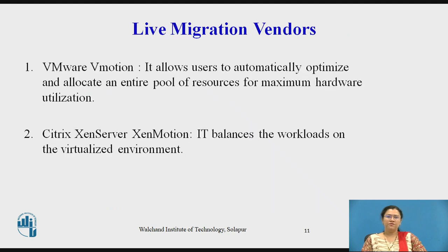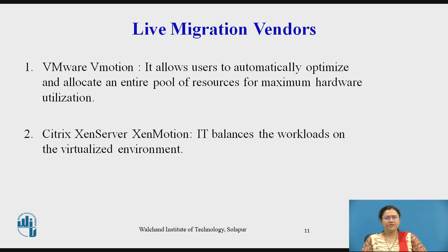Now we will see the list of live migration vendors. First is VMware vMotion, and second is Citrix XenServer XenMotion. VMware vMotion allows users to automatically optimize and allocate an entire pool of resources for maximum hardware utilization. Citrix XenServer XenMotion balances the particular workload on virtualized environments.